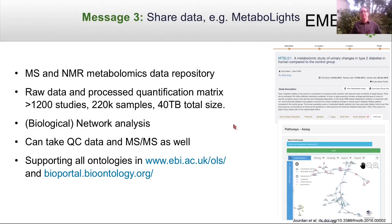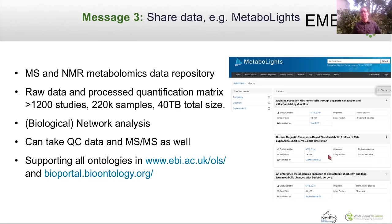The prime example in metabolomics is the MetaboLights repository at the EBI, for both MS and NMR. There are more than a thousand studies there now, and it can give you some network analysis for your data. It accepts QC and MS spectra as well and supports all the ontologies in the bio-ontology world. Some studies can be private, visible only to you or people you share the link with.